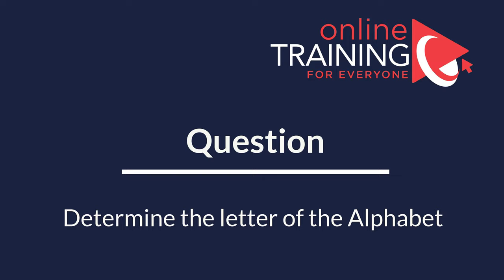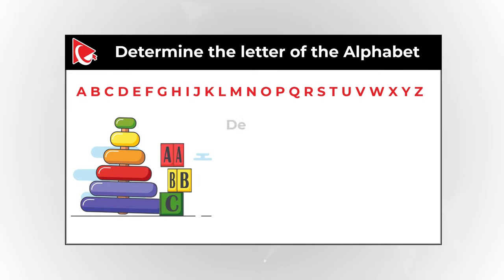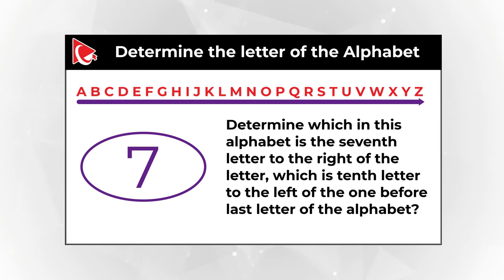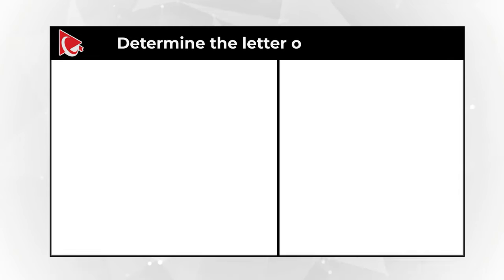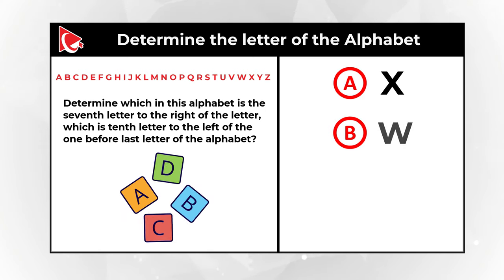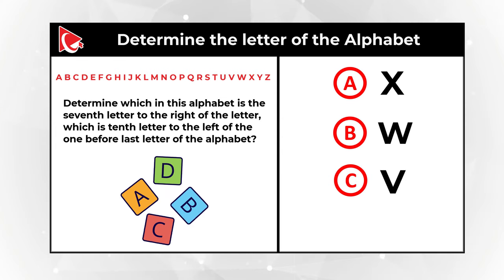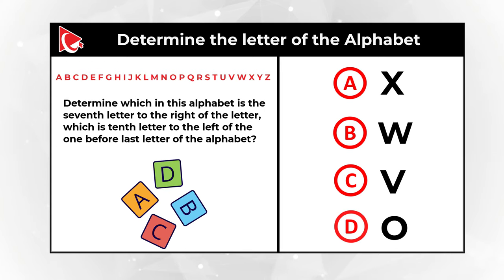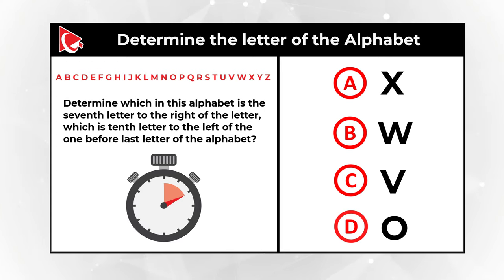I'd like to share with you a very interesting question where you need to determine the letter of the alphabet. You're presented with 26 letters of the English alphabet, and you need to determine which letter is the 7th letter to the right of the letter which is the 10th letter to the left of the one before the last letter of the alphabet. You have 4 different choices: Choice A, letter X; Choice B, letter W; Choice C, letter V; and Choice D, letter O. Can you determine the answer? Give yourself a little bit of time, maybe pause this video for 10 to 15 seconds.